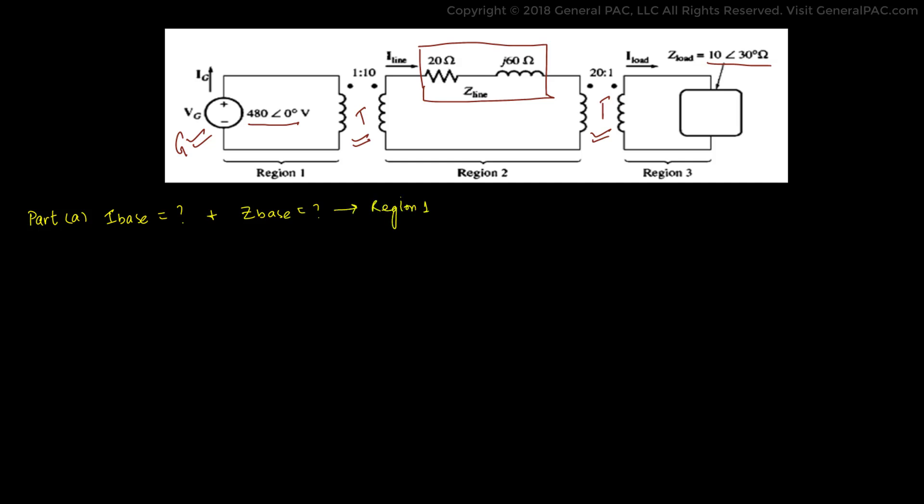Part A asks us to calculate the base value for current and impedances for region 1. As given in the question, we know that V base is equal to 480 volts and S base is equal to 10 kVA. And we also know that to calculate I base and Z base, we just have to use the following formulas.